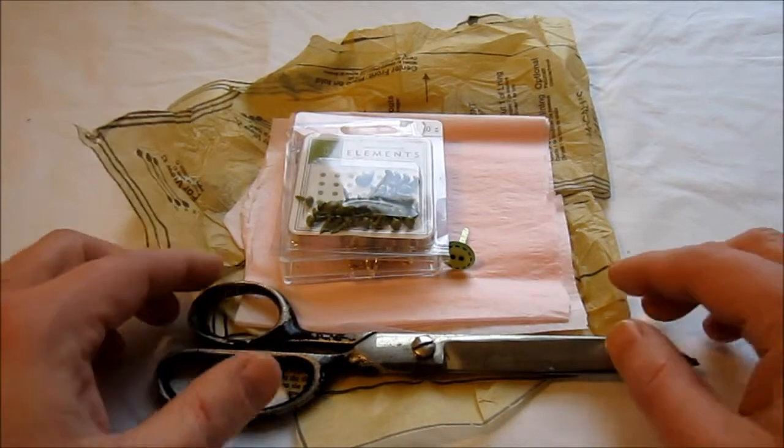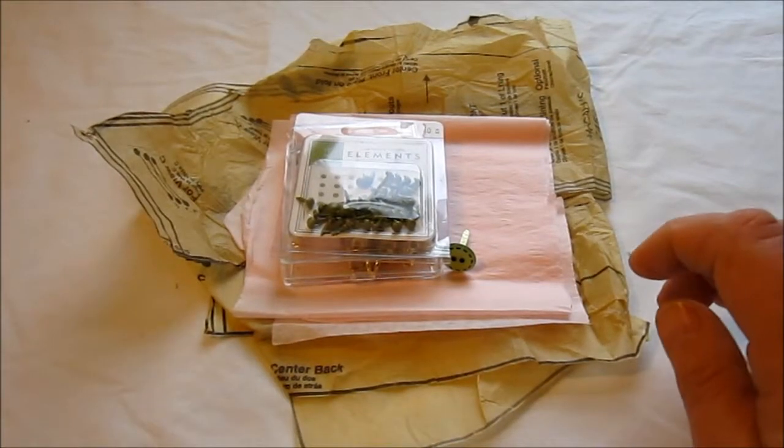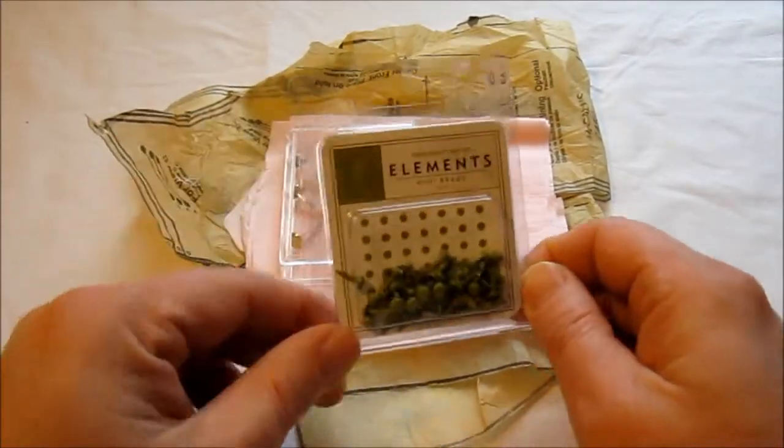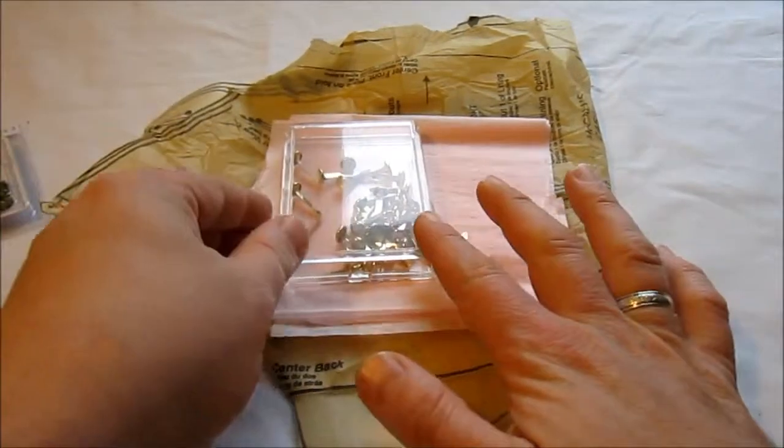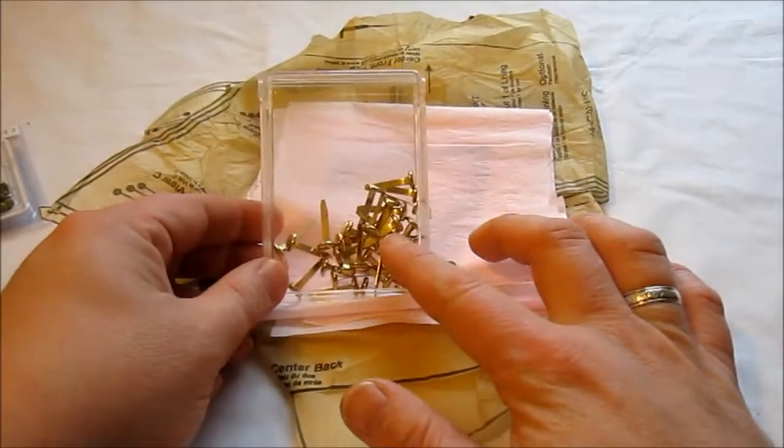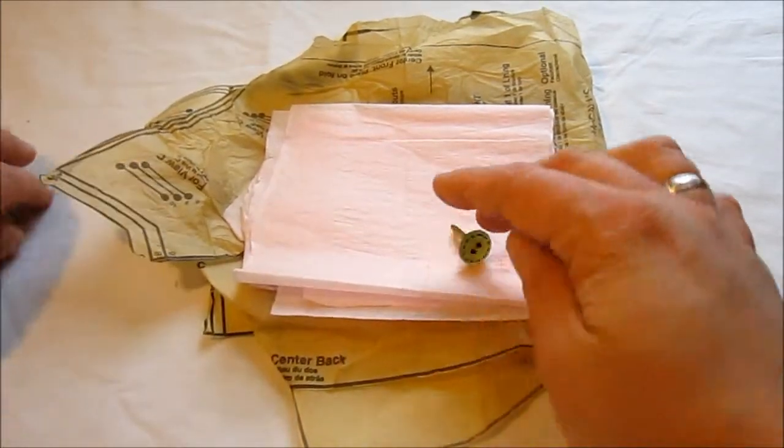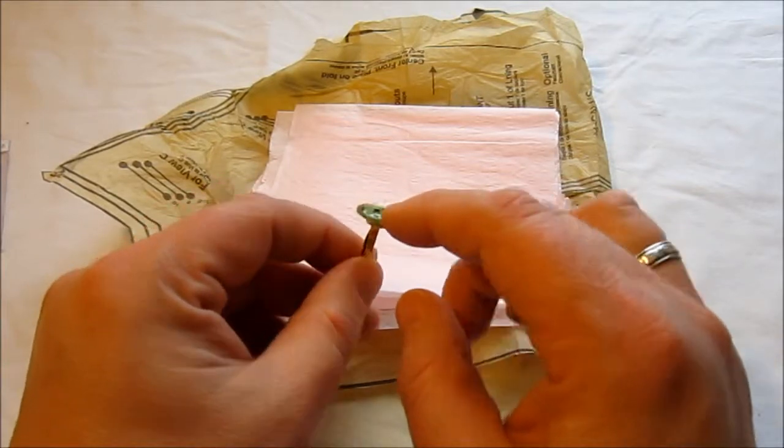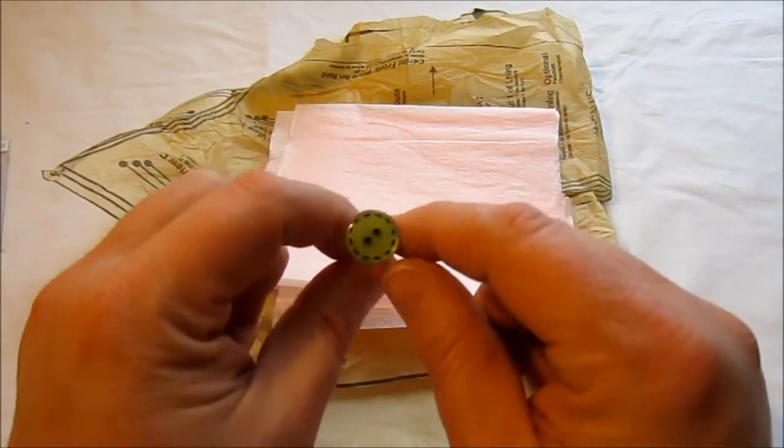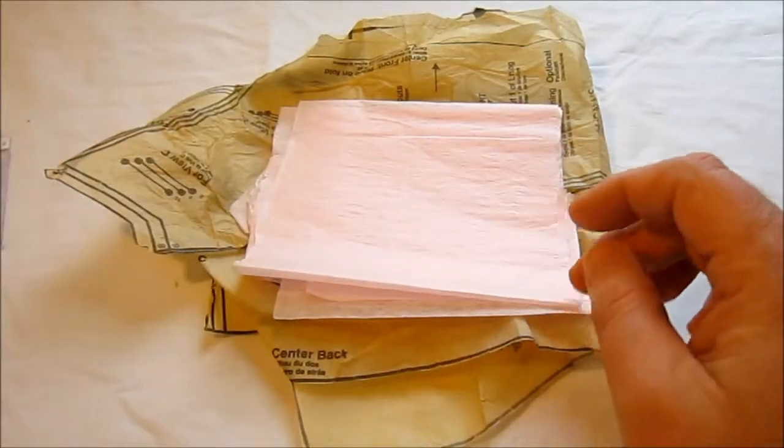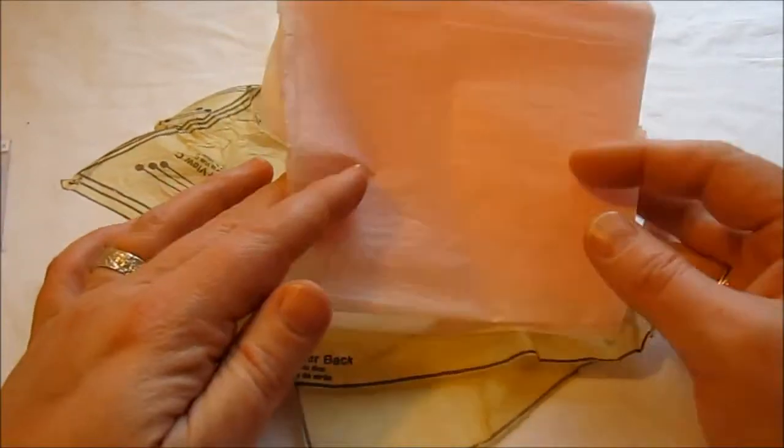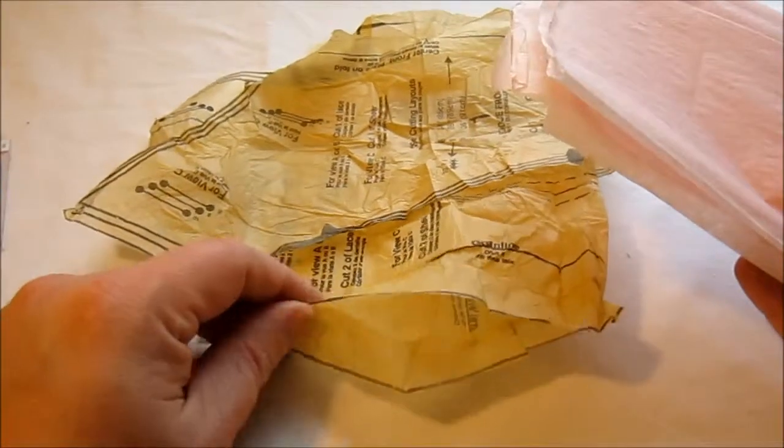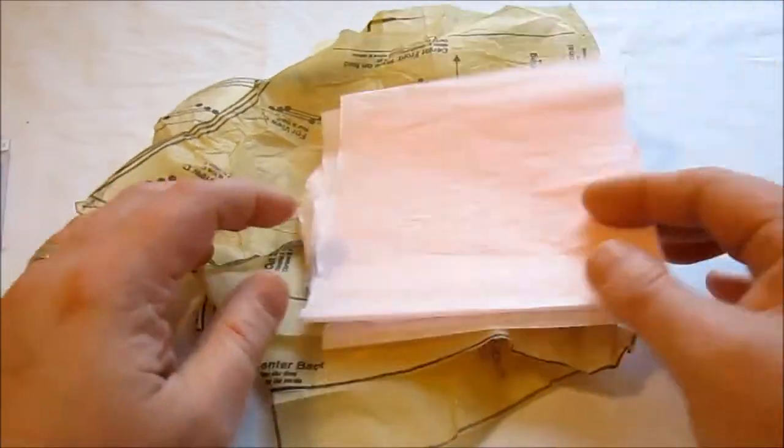To make this cute flower you need scissors, a brad—you can use brads made for scrapbooking, office supply brads, or a button brad (check my videos for how to make those)—and tissue paper. You can use regular tissue paper, an old pattern that uses tissue paper, or a combination.